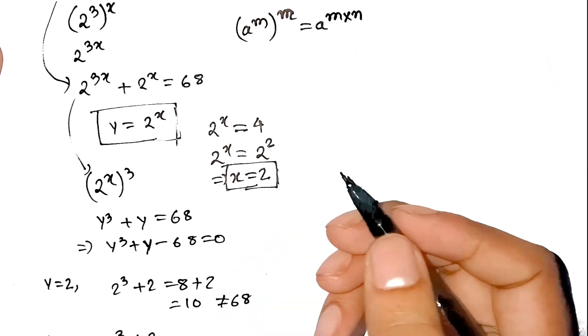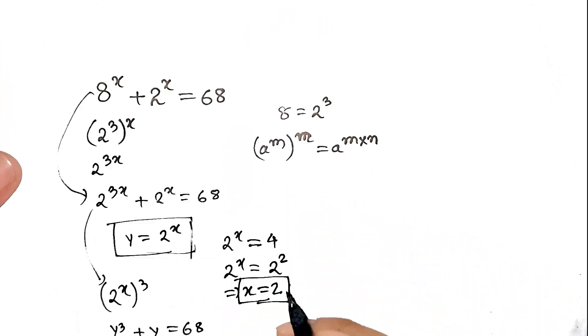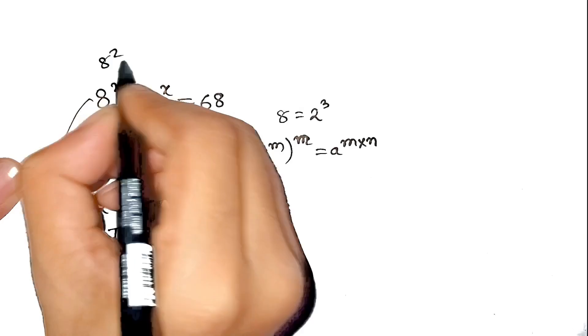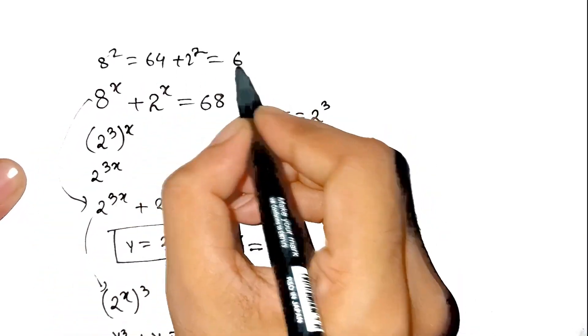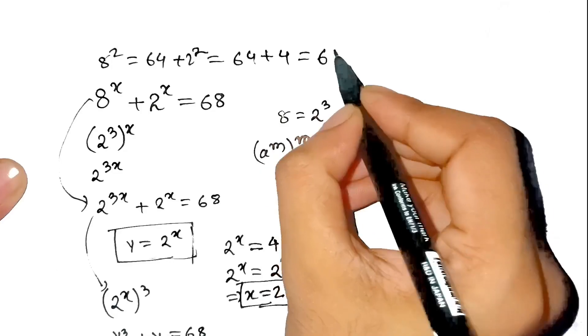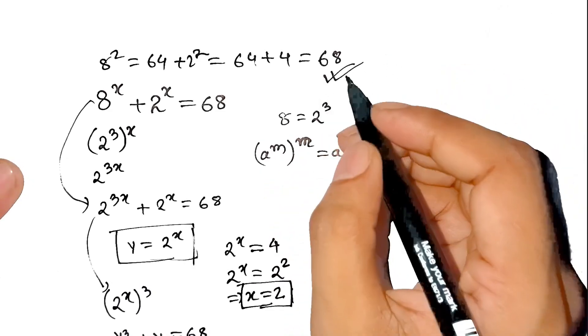But hey, let's not celebrate too early. Always check. If x = 2, then 8^2 = 64. And 2^2 = 4. Add them: 64 + 4 = 68. Chef's kiss. Perfect solution.